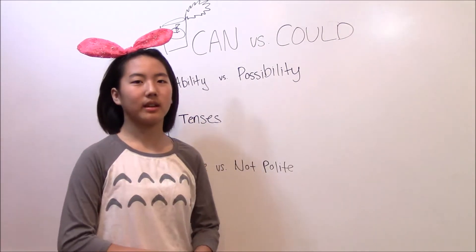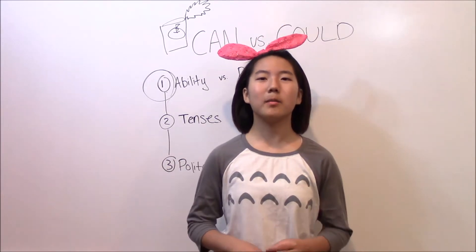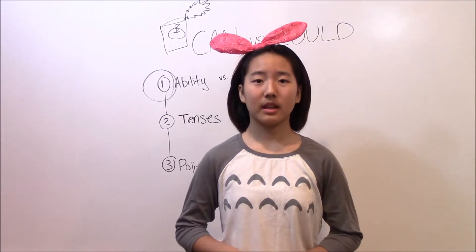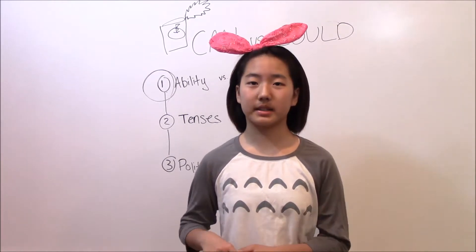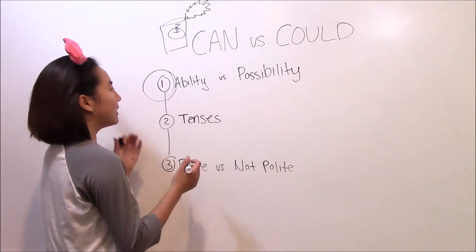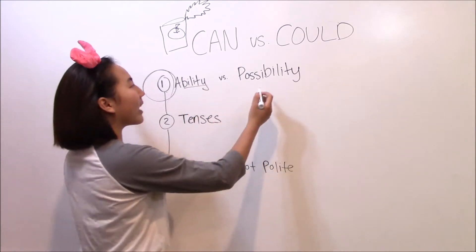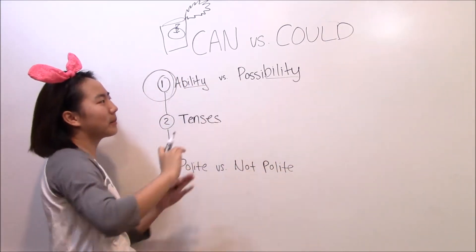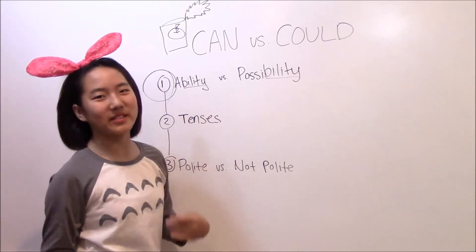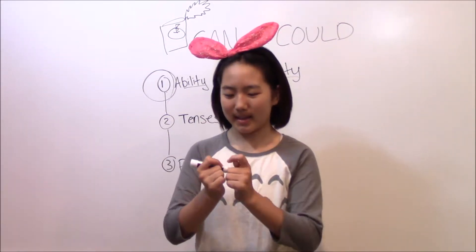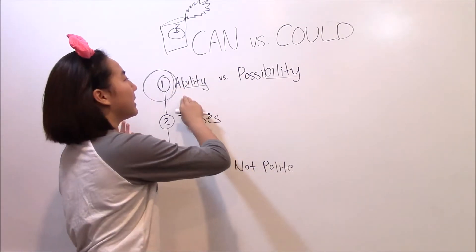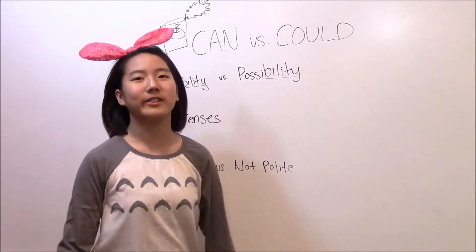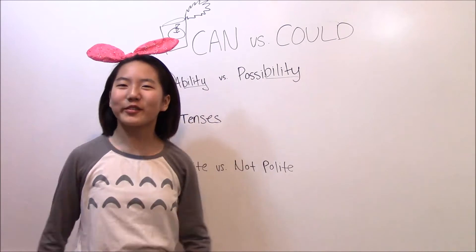Ability versus possibility. Follow me: ability. One more time: ability. Next: possibility. One more time: possibility. They end with the same thing — ability and possibility — so they kind of sound similar and they rhyme. Which one do you think is ability and which one do you think is possibility? Let's think about it for a few moments.